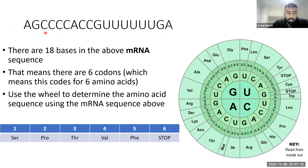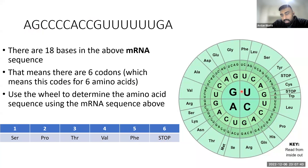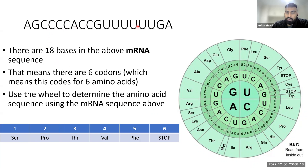We're going to use this codon wheel to find the amino acid sequence: serine, proline, threonine, valine, phenylalanine, and a stop codon which stops the process. You read from the inside out. For A, G, C: start with A in the middle, then G, then C - and it says SER (serine). For C, C, C: find C in the middle, then C, then C again - that gives proline. Have a go finding all of them and see if they match up. You don't need to memorize the amino acid names - they'll give you the wheel in the exam.